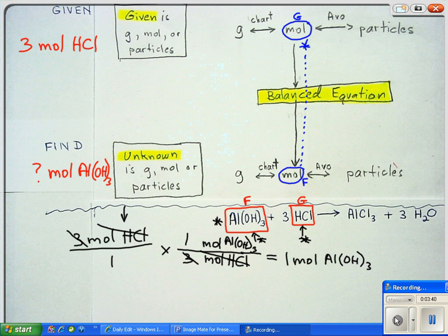And we are done with problem number one. And we have gone all the way from moles of the given, which was the hydrochloric acid, to moles of the find, which is the aluminum chloride.